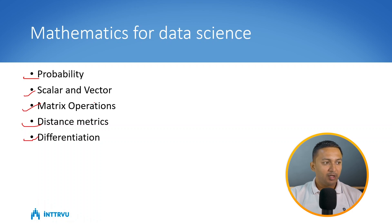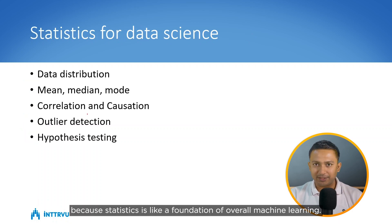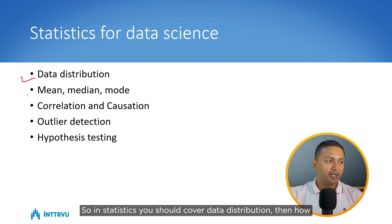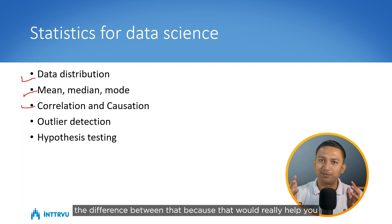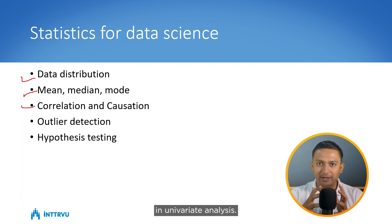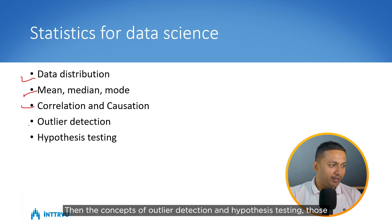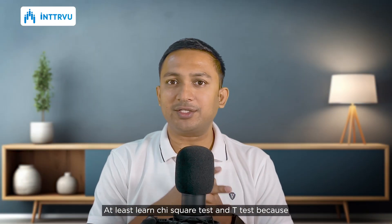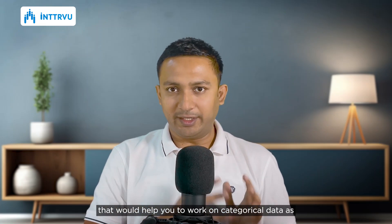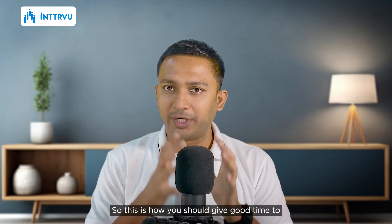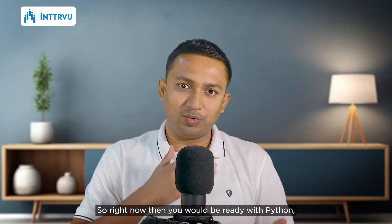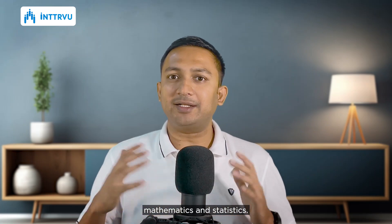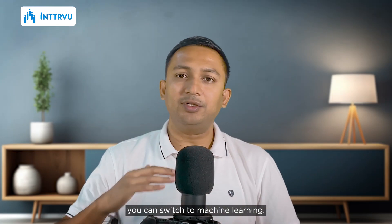After mathematics, you can go to statistics, because statistics is the foundation of overall machine learning. In statistics, cover data distributions, mean, median, and mode, then correlation and causation and the difference between them, which helps in univariate analysis. Also cover outlier detection and hypothesis testing. In hypothesis testing, at least learn the chi-square test and t-test, as those help you work on categorical and numerical data.